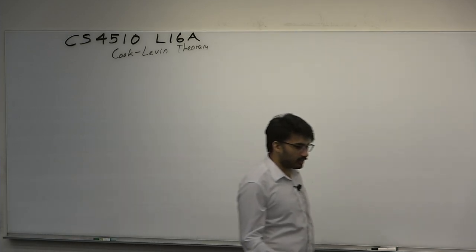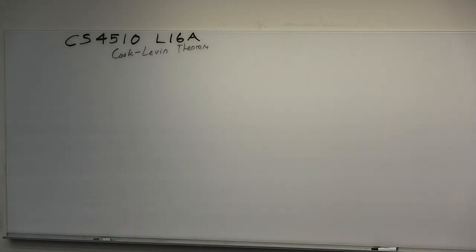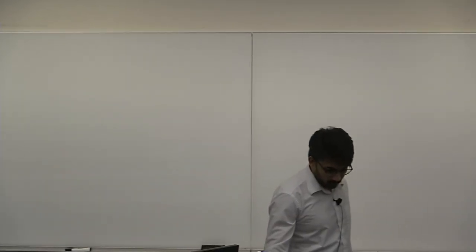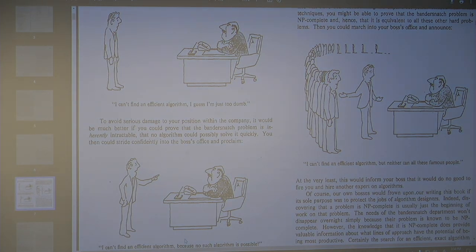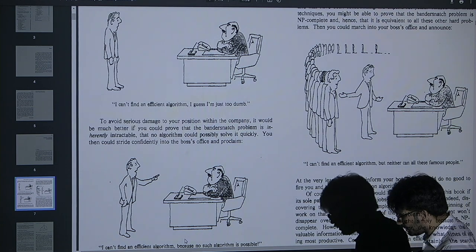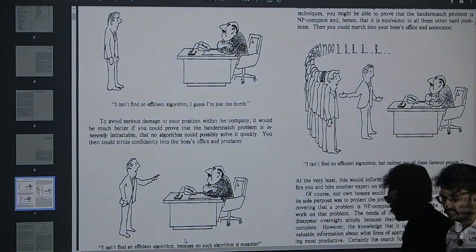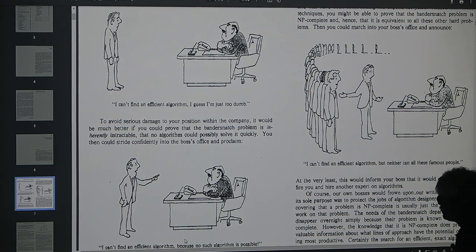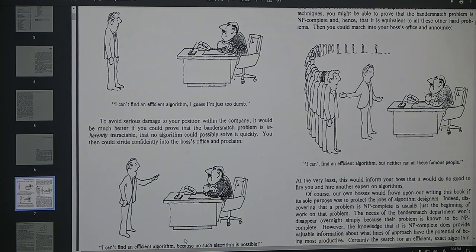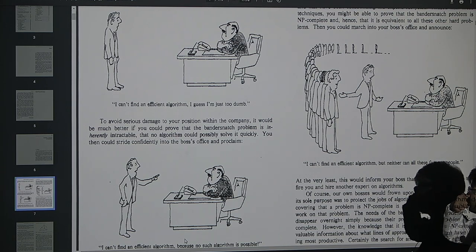What is the point of NP-completeness? People will understand this or memorize enough to pass an exam without knowing what the point of it is. There's a little cartoon from a textbook from 1979 by Garey and Johnson. The setting is: a guy is working in industry, comes across a problem, and is unable to find an efficient algorithm. He's tasked by his boss to find one — to help sell more of whatever, find the most efficient way to allocate resources on the factory floor. And he says, 'I can't find an efficient algorithm. I guess I'm just too dumb.' This is the first scenario.